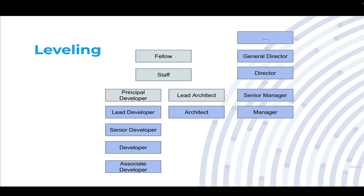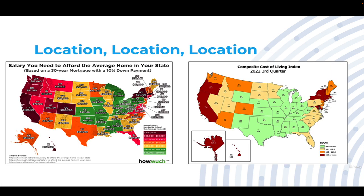Beyond that, at some companies — and this is more rare — you get into fellow-style positions. This represents the highest level of the individual contributor technical track, with titles generally containing the word 'fellow.' This is roughly equivalent to a general director, or at smaller companies an AVP or vice president. This leveling is worth noting because it's the compensation ceiling that ultimately drives a lot of software developers to move into the management track.